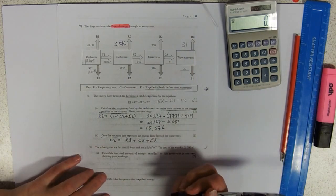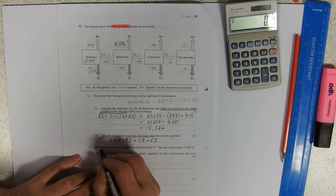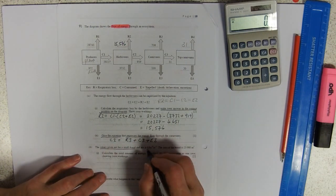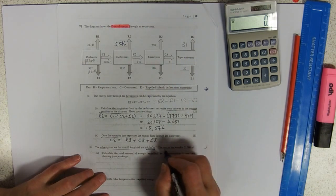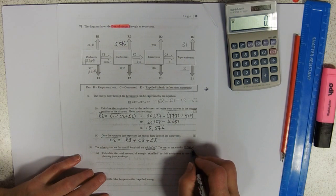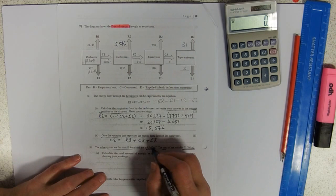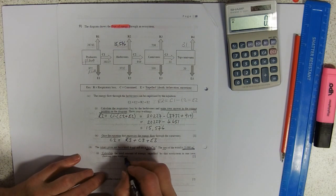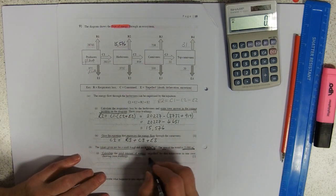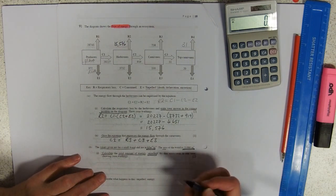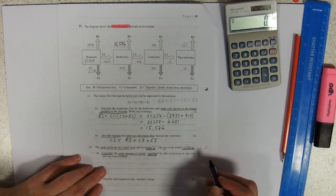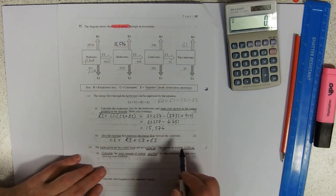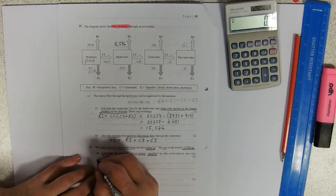So the values given are for a small wood in kilojoules per meter squared per year. The area of the wood is 25,000 meters squared. I've got values per meter squared. Calculate the total amount of energy—I don't like that word 'amount'—expelled by this ecosystem in one year. So how much is expelled? So my expelled energy...